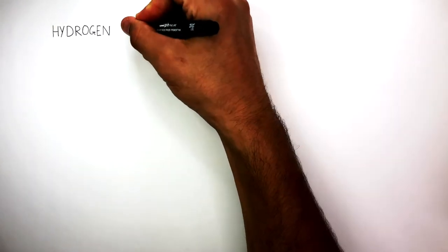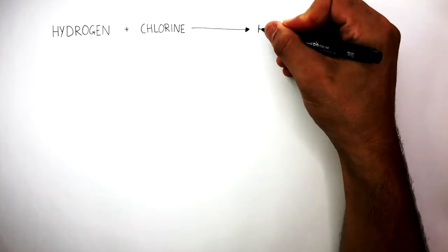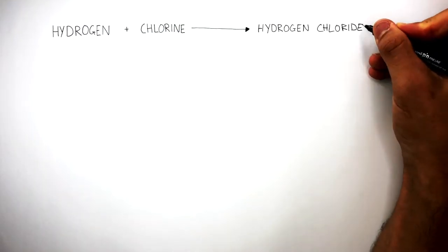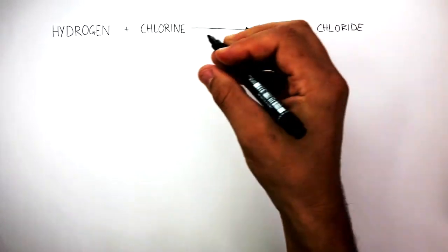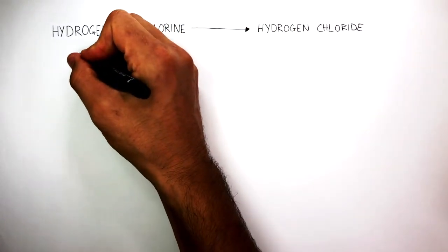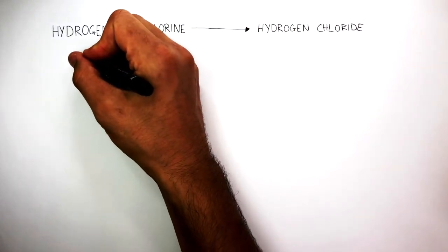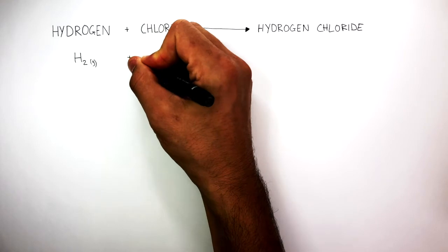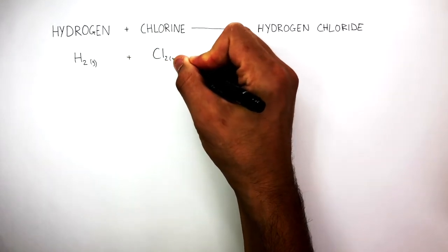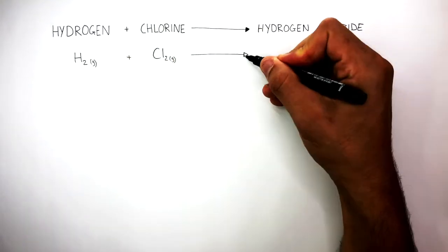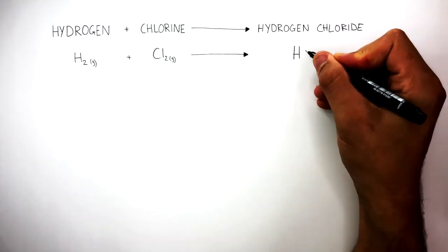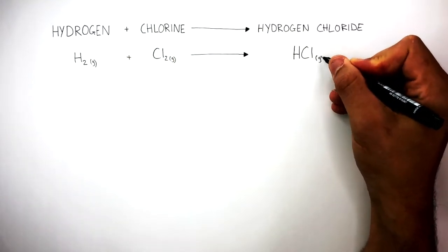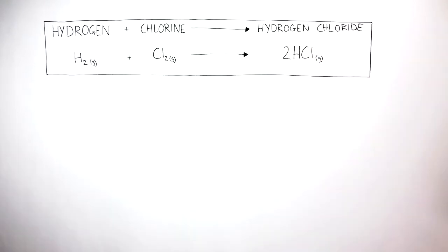When hydrogen reacts with chlorine, hydrogen chloride is formed. The balanced symbol equation for this chemical reaction is H₂(g) reacts with Cl₂(g) to form 2HCl(g). We put a big 2 in front of the HCl to balance the equation.